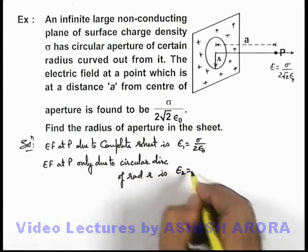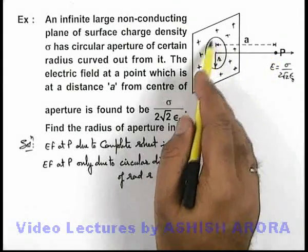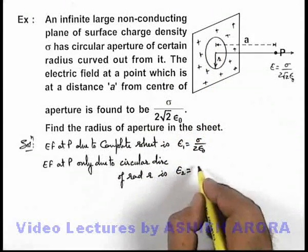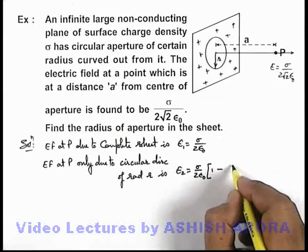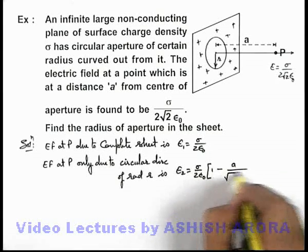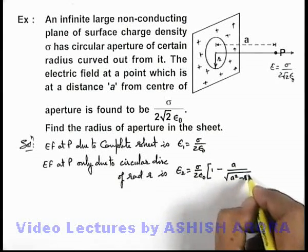This we can write as E2 which is the electric field at P only due to this circular disc. This can be written as sigma by 2 epsilon not, 1 minus 'a' upon root of a square minus r square.